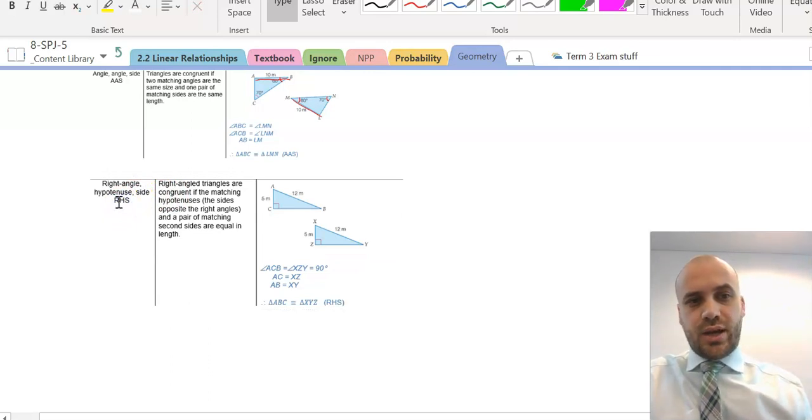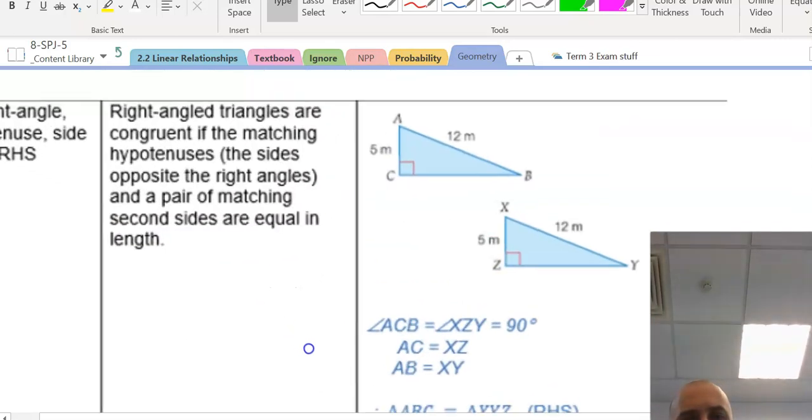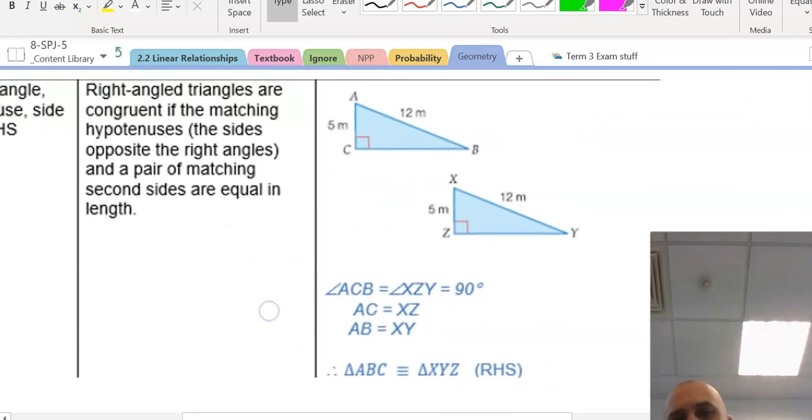So, right angle, R, hypotenuse, H, and another side, S. Let's take a look at this shape here. We can see that, oh, there's a right angle.